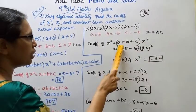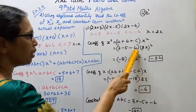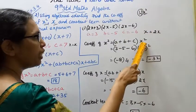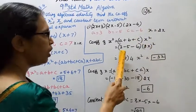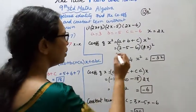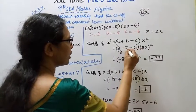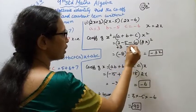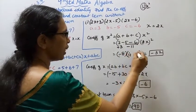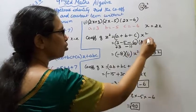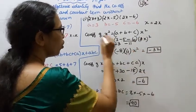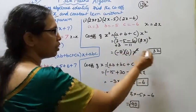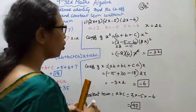Now the second problem: a is 3, b is minus 5, c is minus 6, with x replaced by 2x. For coefficient of x squared, a plus b plus c equals 3 plus minus 5 plus minus 6 equals minus 8. Then minus 8 times (2x)² means minus 8 times 4, giving minus 32. Coefficient of x squared is minus 32.